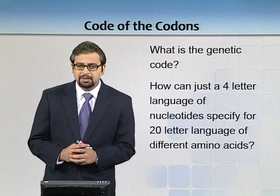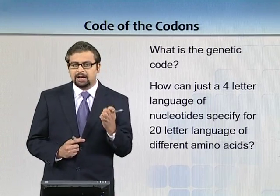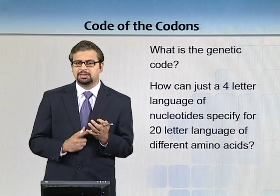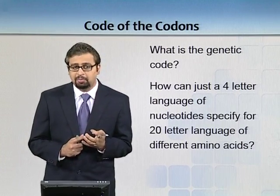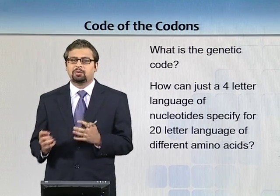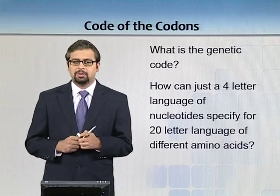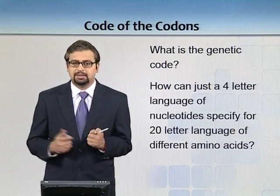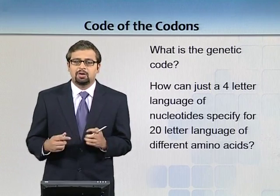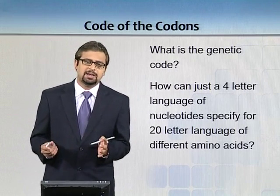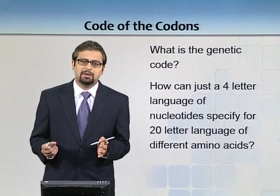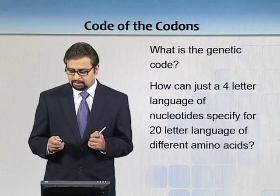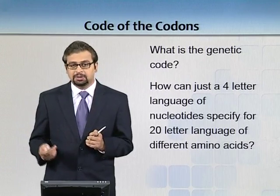On one hand, you have only 4 bases: adenine, guanine, cytosine, and thymine. On the other hand, you have 20 amino acids. So how can a smaller set of letters translate into various combinations that can ultimately give a bigger language?